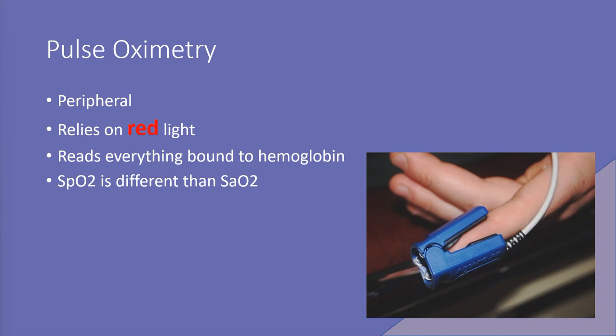Our SpO2, which is what we get with our pulse oximeters, is different than our SaO2. SaO2 is the saturation of arterial oxygen, which is measured by a blood gas.